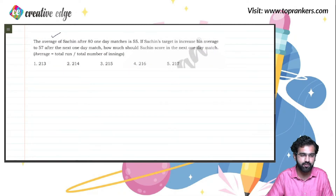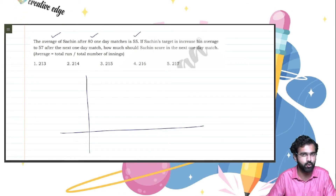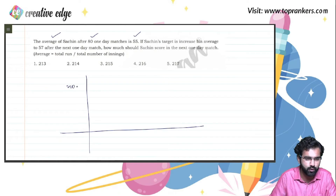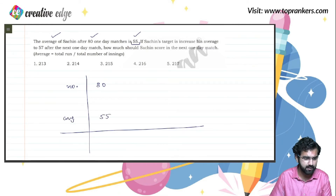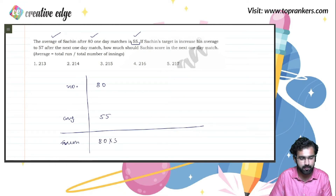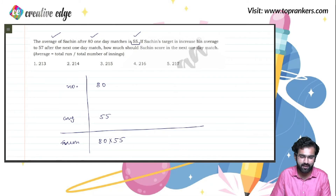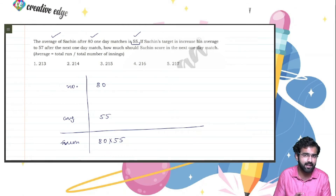The average of Sachin after 80 one-day matches is 55 runs. So he has played 80 one-day matches and maintained an average of 55 runs per match. The total runs scored so far would be 80 times 55. This is where a lot of calculation is involved, and you should develop a different approach to avoid that.